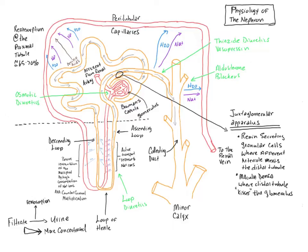Let's look at some of the nuance here. This tubule closest to the Bowman's capsule has a very twisty, curvy appearance — those curves are also known as convolutions. So this is known as the proximal convoluted tubule. It's proximal to the Bowman's capsule and it's convoluted — it's twisty.